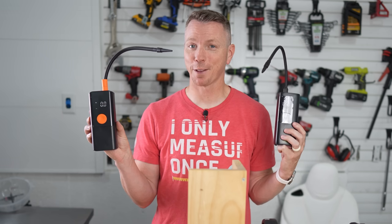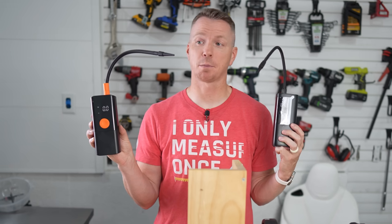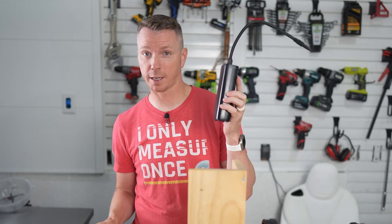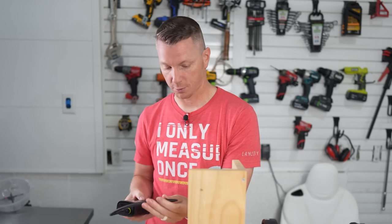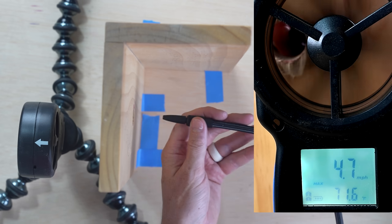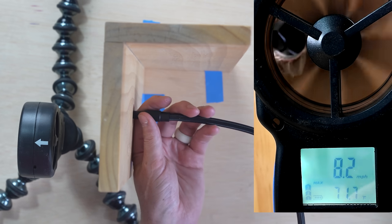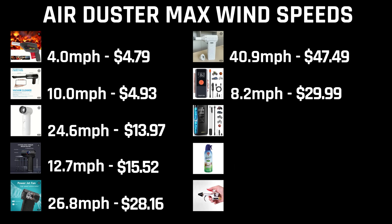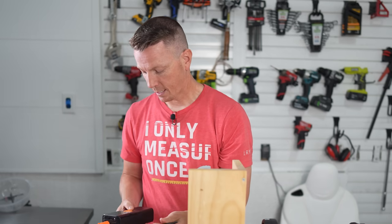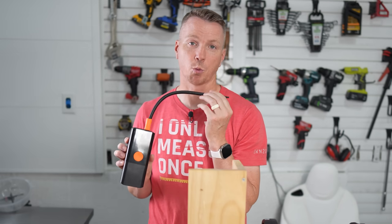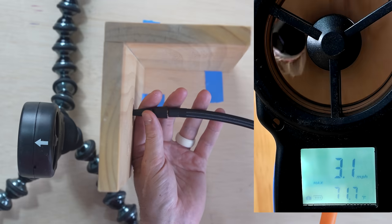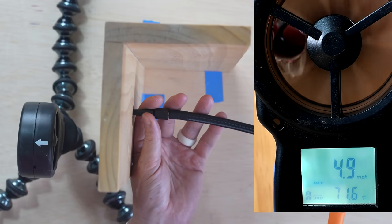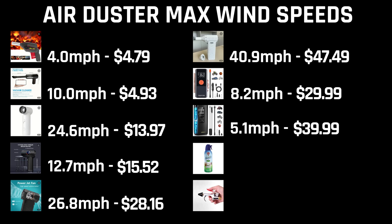Next up we have the tire inflators. Let's see how these guys do just as blowers. We'll start out with the thirty dollar device here. So I've got it maxed out and we'll see what it can do. So 8.2 miles an hour on the thirty dollar inflator and on this one I'm going to set it to its max which is 150 psi. This is a forty dollar inflator. Let's give this one a try. So only 5.1 on our more expensive forty dollar tire inflator here.